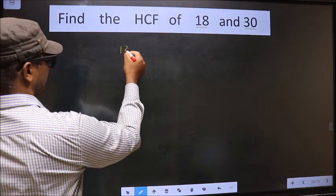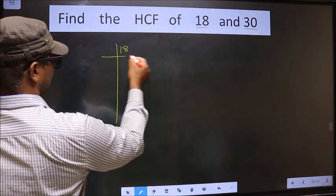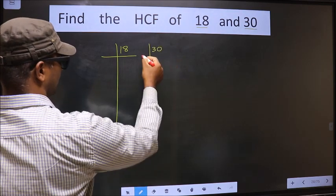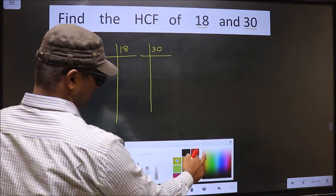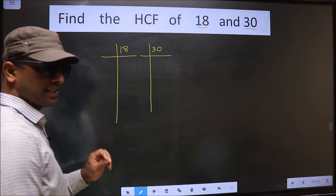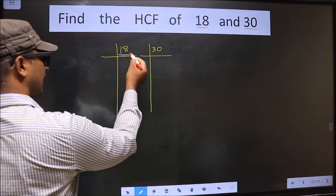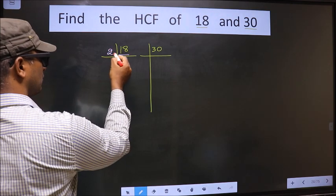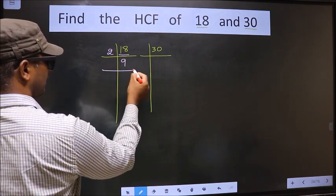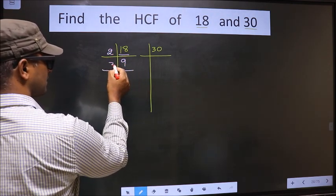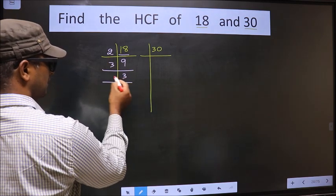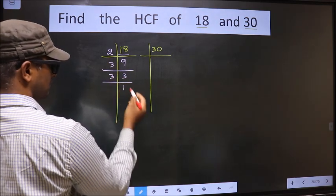18, 30. Okay. Next. Here we have 18. 18 is 2×9 is 18. Now we have 9, 9 is 3×3 is 9. We have 3, 3 is a prime number so 3×1 is 3.